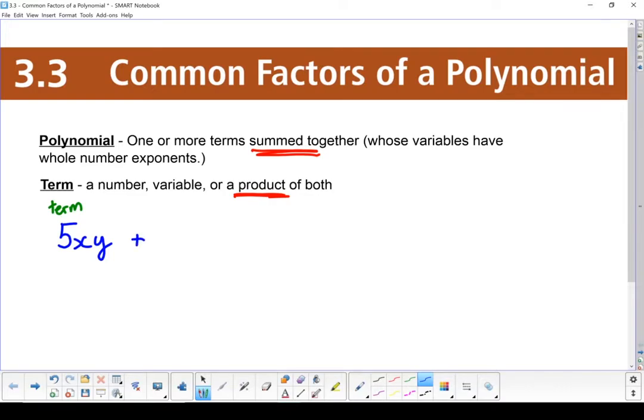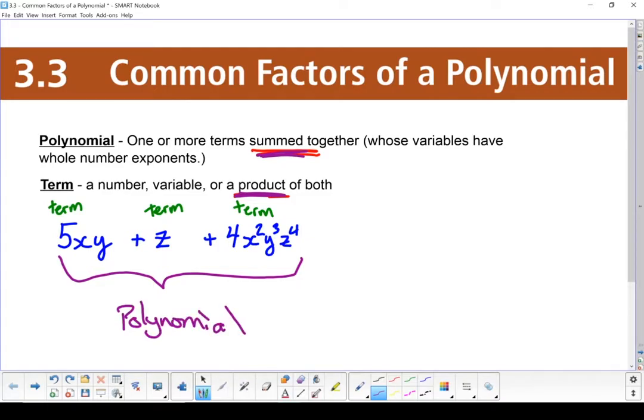But as soon as I add something else on, we have now added in a new term. That's now two terms. Still one polynomial, but two terms. I can add in more terms. There's no limit to how many terms can be in a polynomial. The difference between the polynomial and a term, as soon as you have things summed together, you now have separate terms. In order to be considered one single term, the whole thing has to be multiplied together. So this whole piece is a polynomial, and it has three terms.